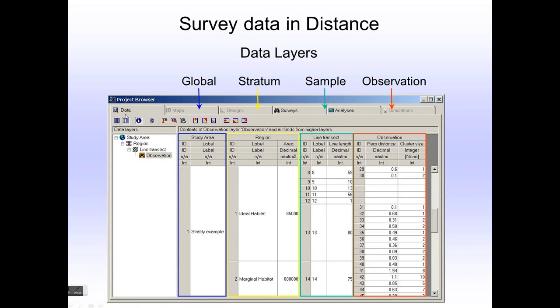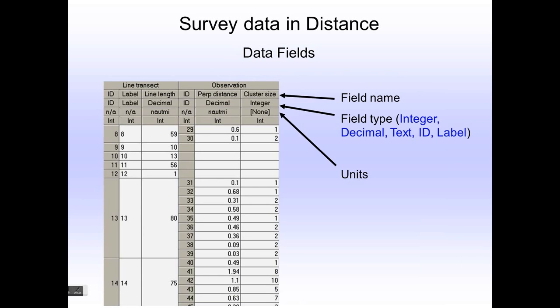Those layers are maintained or represented when you look at the data tab in your project browser. You'll see information about the global layer, the strata layers, the sample layer, and the observation layer. So here again you see the hierarchical nature of the database that contains your distance project information.